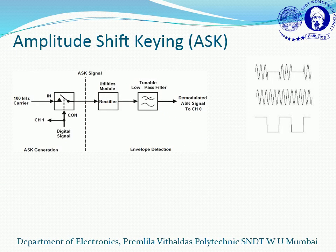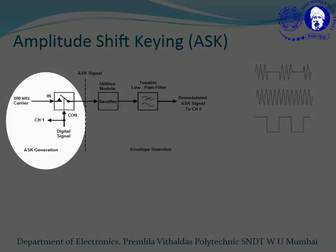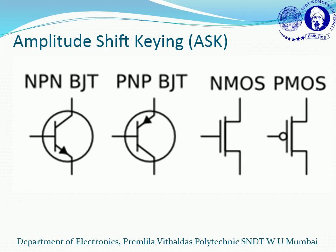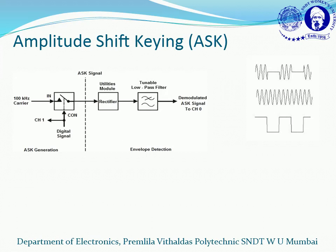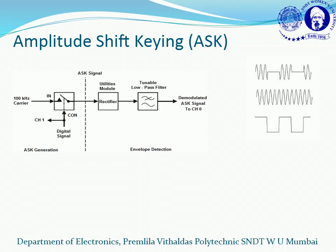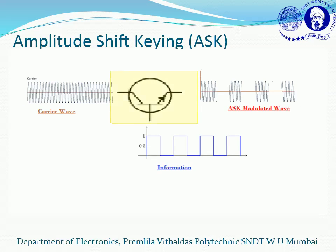Now let us look at amplitude shift keying. In the diagram there are two blocks: one is the modulator and the other is the demodulator. The modulator is essentially a switch — any electronic switch like a transistor can be used. The input to the switch is a carrier wave, and the on/off position of the switch is controlled by the digital information. If a transistor is used, the collector is connected to the carrier wave, the base is connected to the information signal, and the output is taken from the emitter.